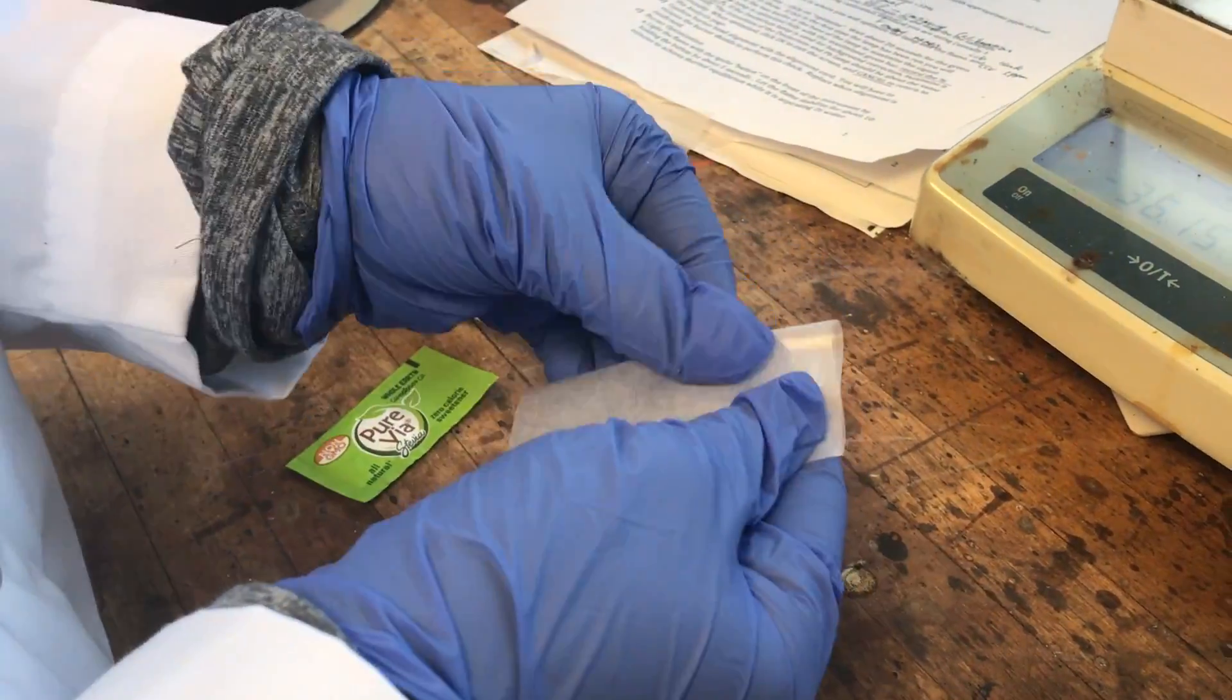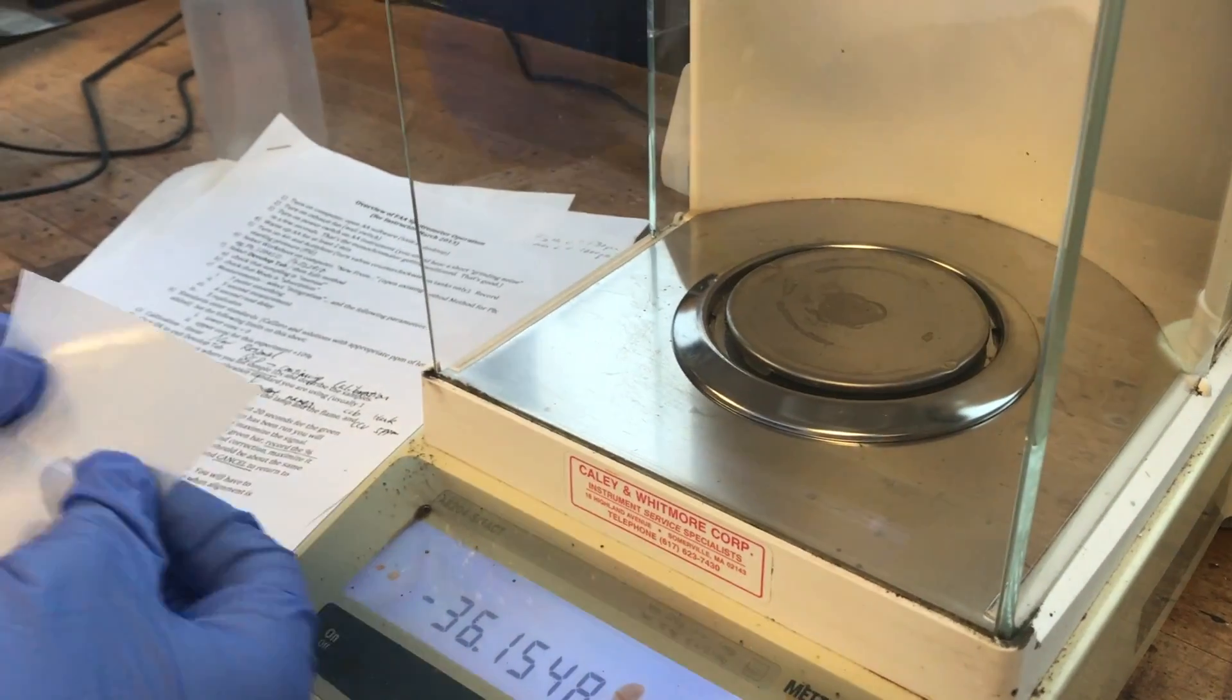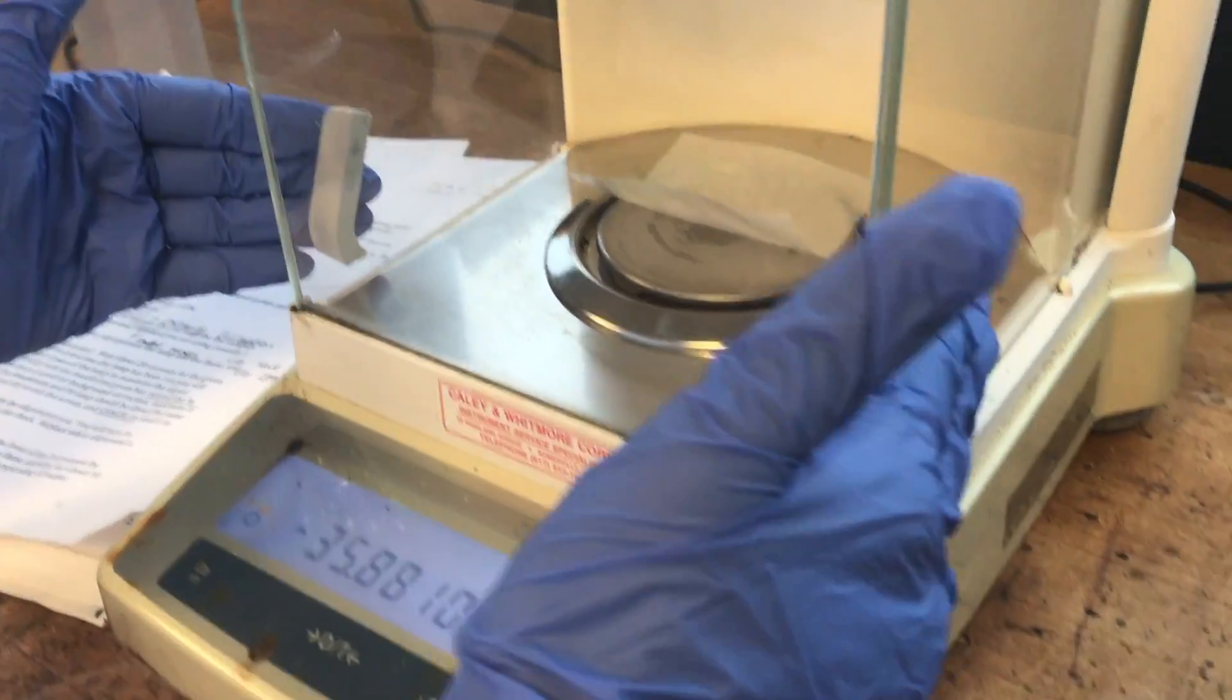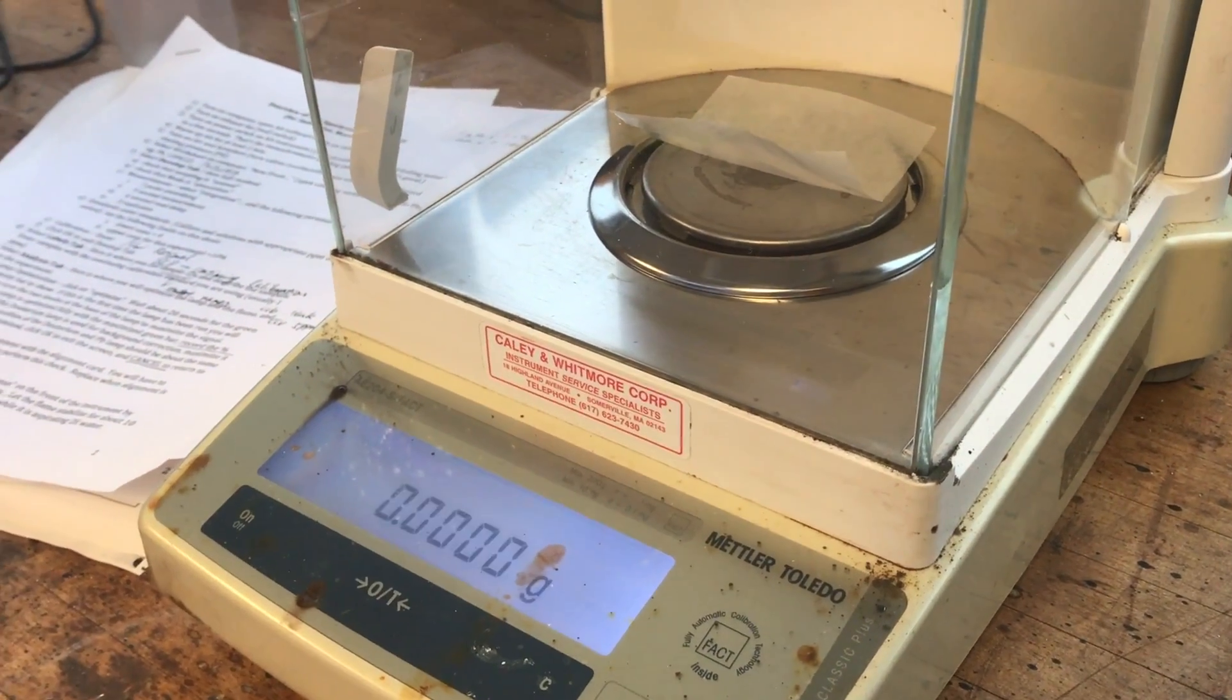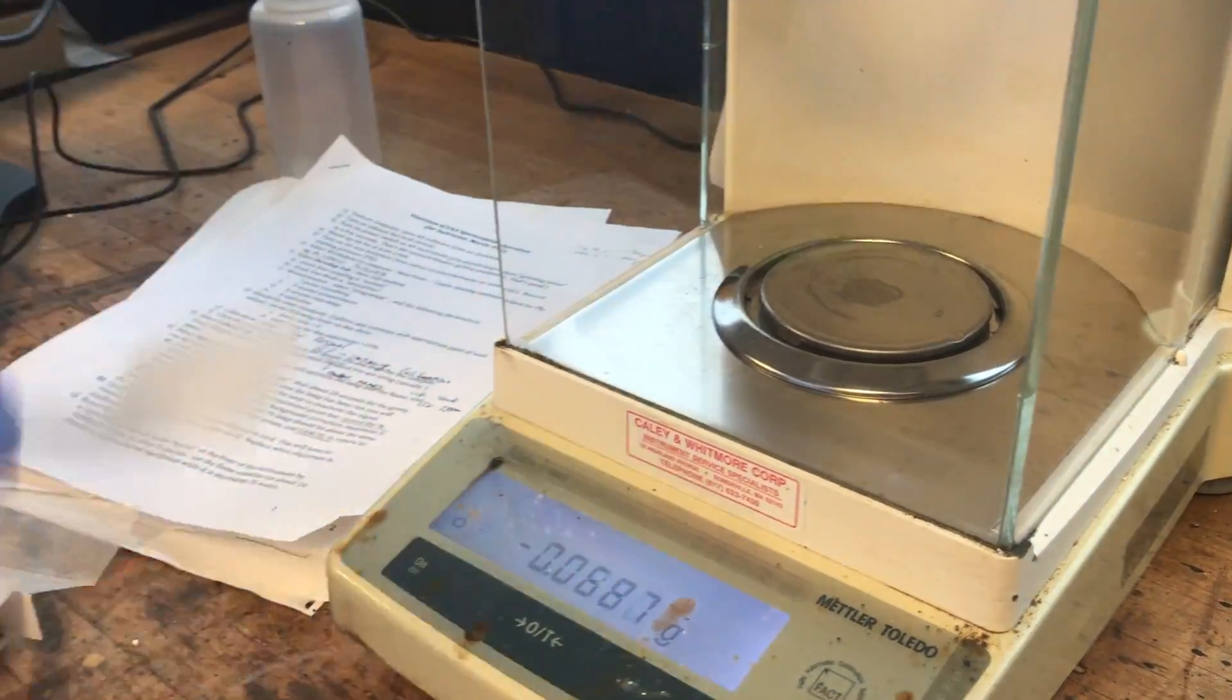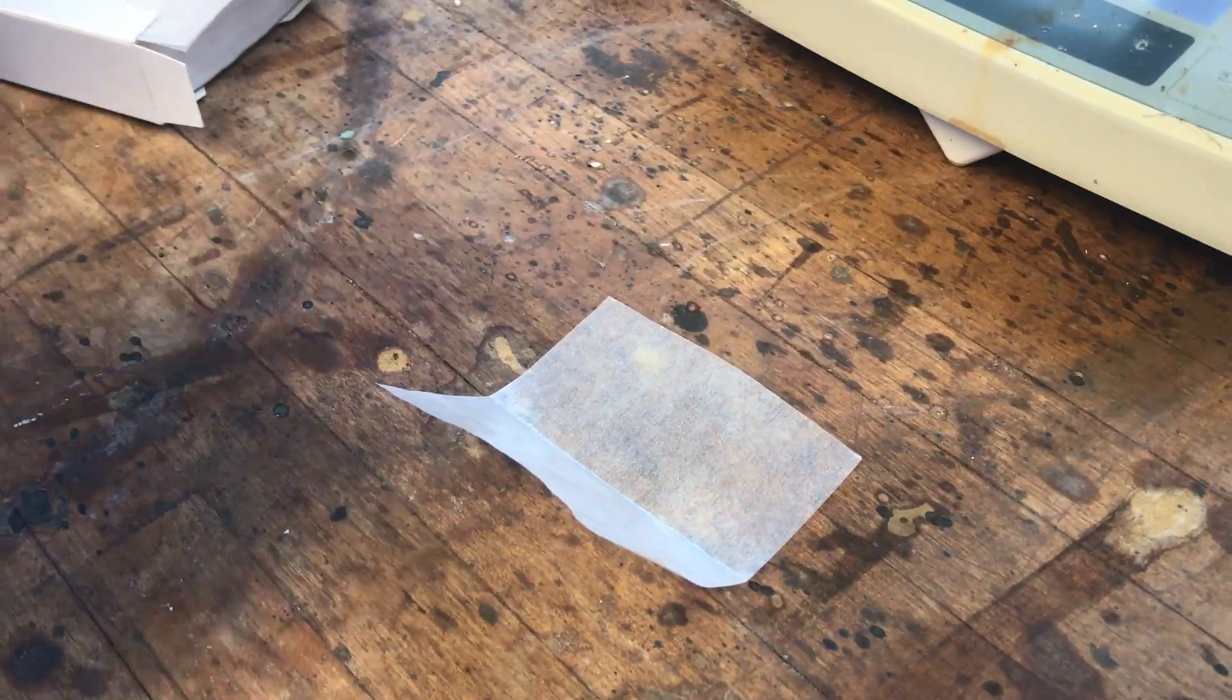For measuring solids, we use weigh paper. You can fold it in half and then place it inside the scale, tare it, and then place your solid onto the weigh paper.